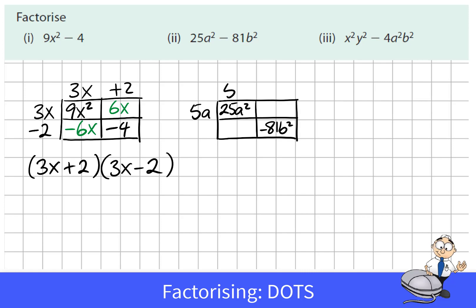The factors of 25a squared will be 5a and 5a the square root of 25a squared. The factors of negative 81b squared will be a negative 9b and a positive 9b. These two factors are the same size with different signs.